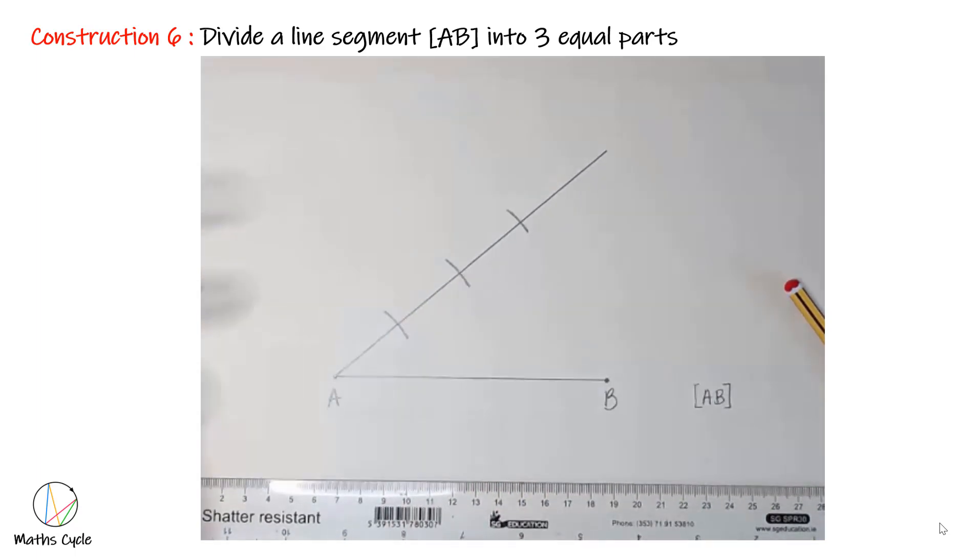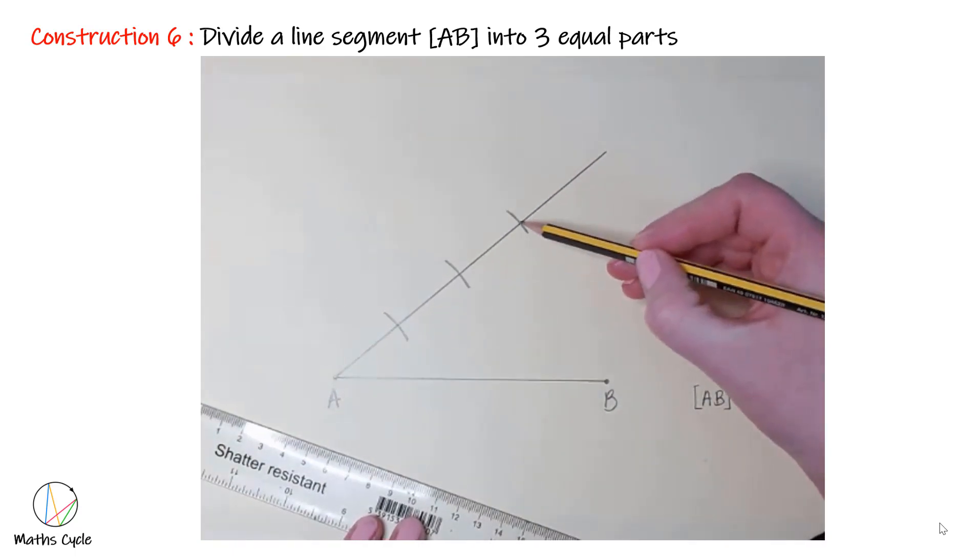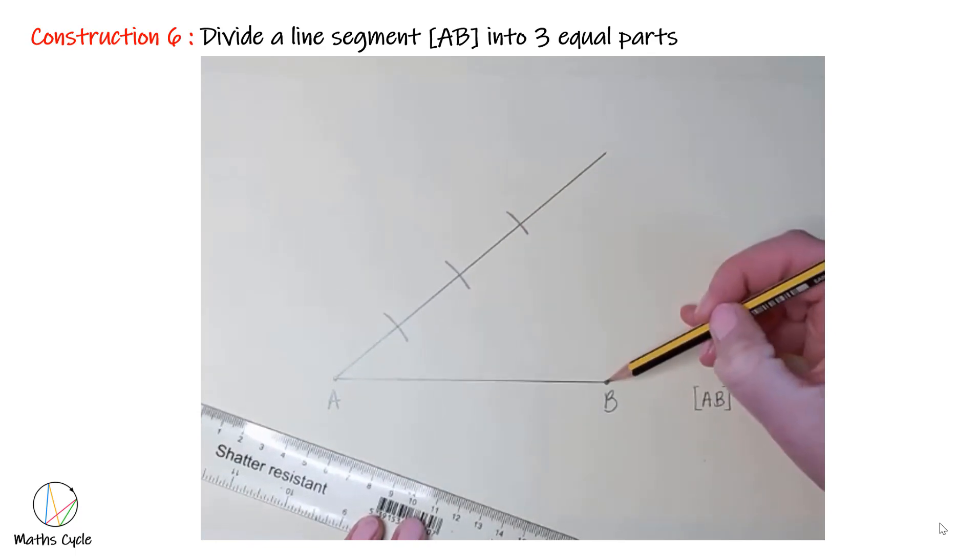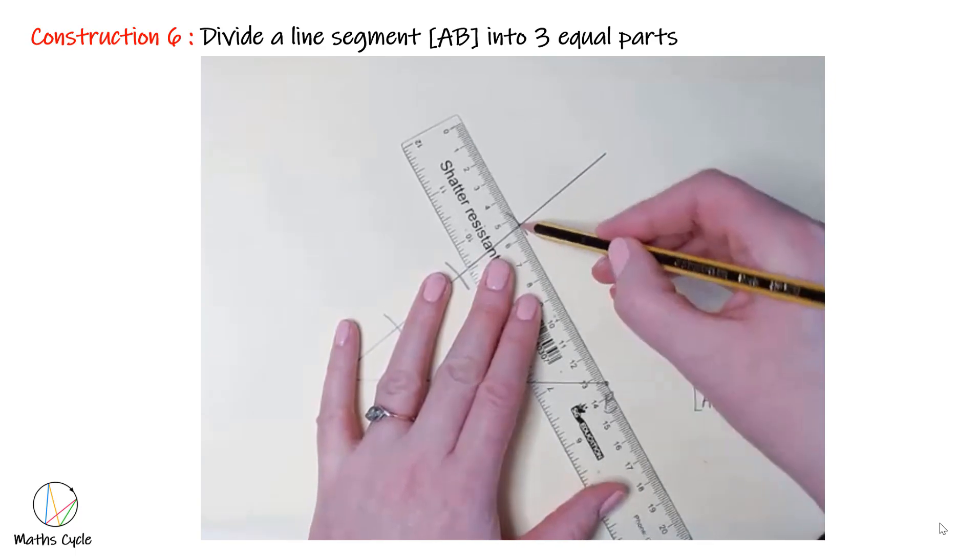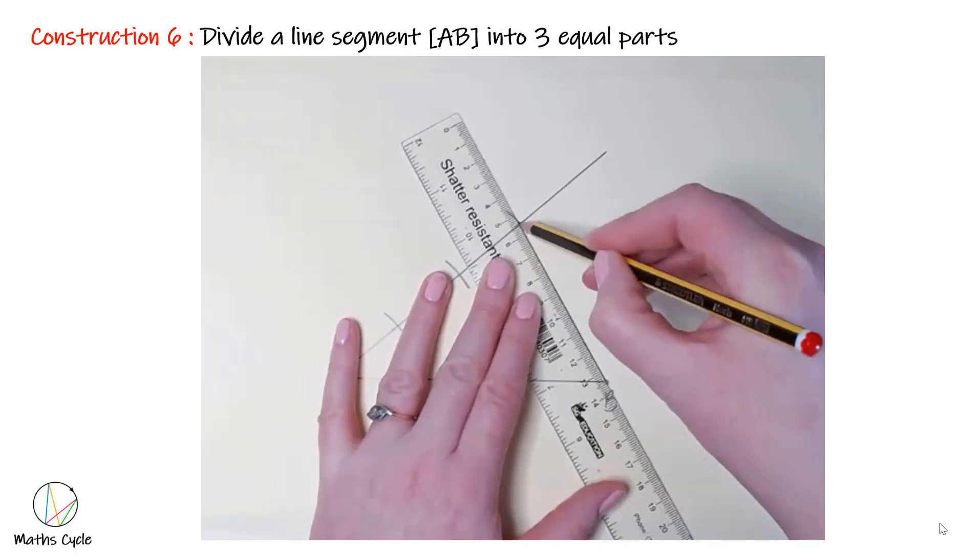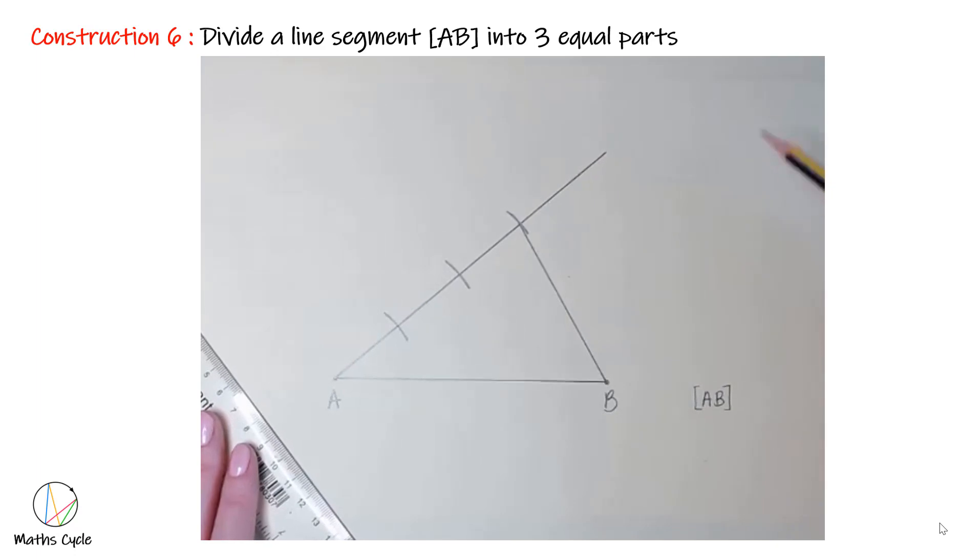Now what we do is take our ruler and join this last arc to the point B, sort of making a triangle. We're going to draw two lines parallel to this line, which will then in turn divide AB into equal parts. How to draw a line parallel to this one?